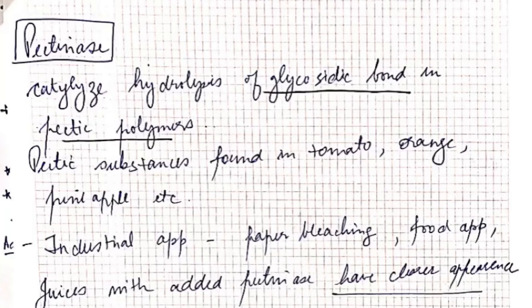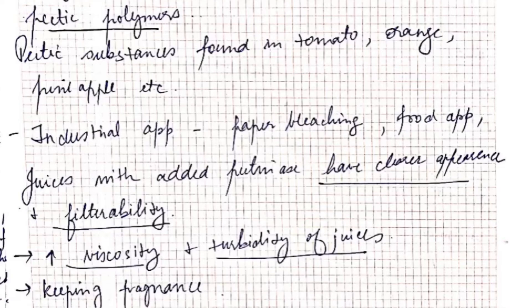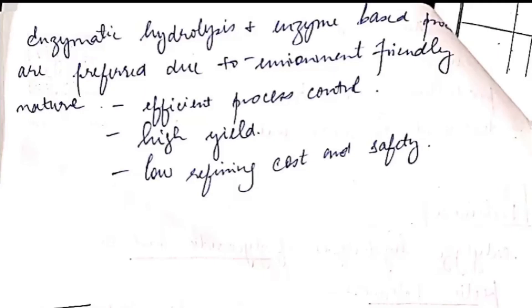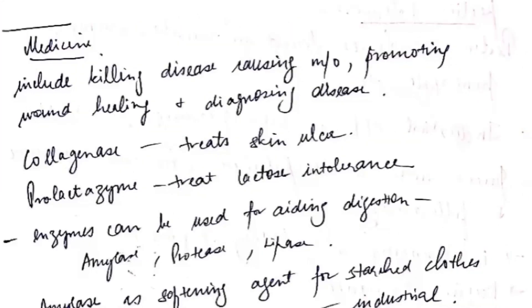The next enzyme is pectinase. It catalyzes hydrolysis of glycosidic bonds in pectic polymers. Pectic substances are found in tomato, orange, pineapple, and others. Its industrial applications include paper bleaching. In food applications, juices with added pectinase have a clearer appearance and better filterability; it also helps in keeping the fragrance. Enzymatic hydrolysis and enzyme-based processes are preferred due to their environment-friendly nature.